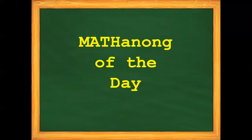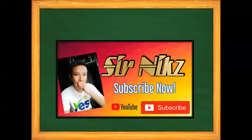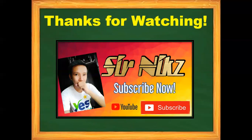And for our matalong of the day: Mila bought two t-shirts at 399 pesos and 99 centavos each and a pair of pants costing 485 pesos and 70 centavos. How much change will she get from her 2,000 peso bill? Thanks for watching. Do not forget to like, comment, share, and subscribe. Bye!